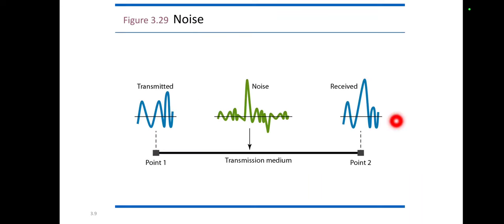The third type is crosstalk noise, which occurs due to the effect of one wire on another. The last type is impulse noise, also called spikes — signals with very high energy in a very short time, resulting from power lines or lightning. These diagrams show how random or unwanted noise gets added to the original signal, and the receiver receives the noise-corrupted signal. These are all the different causes of transmission impairment.